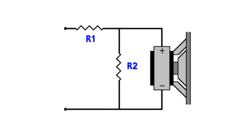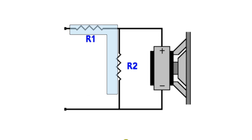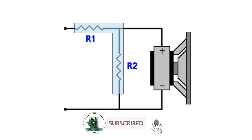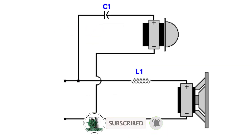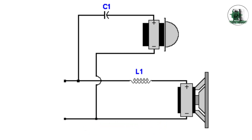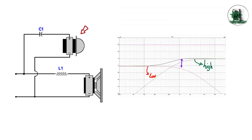One of the widely used circuits in crossover design is the L-pad resistor network. Suppose we have two drivers and the sound pressure level of one of them is higher than the other. High-frequency drivers or tweeters usually have a higher sound pressure than woofers after assembling the speaker. It can also be true for mid-range drivers. One solution for this problem is an L-pad resistor network, which helps us equalize their levels.